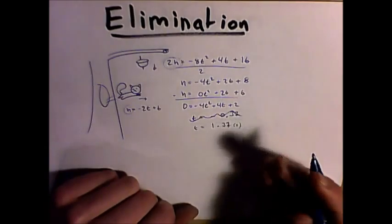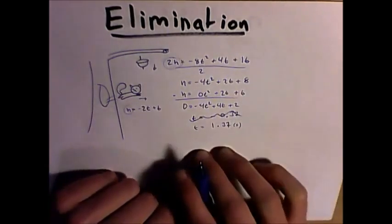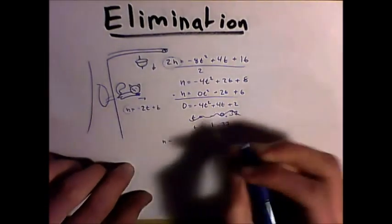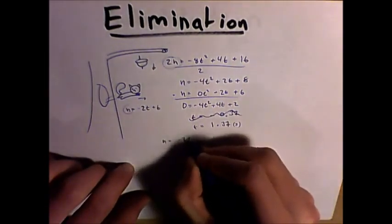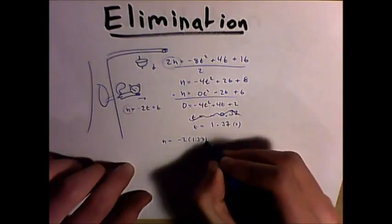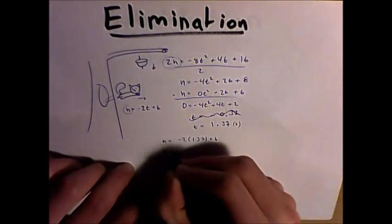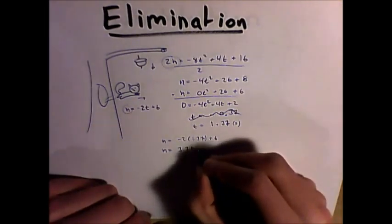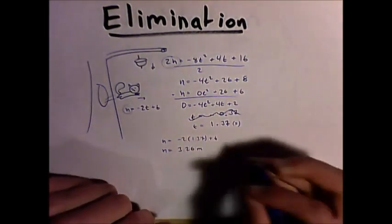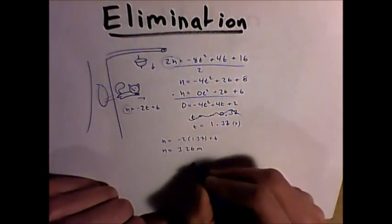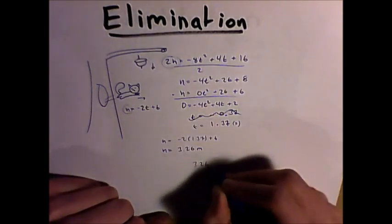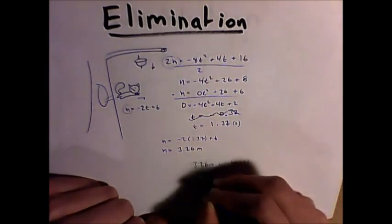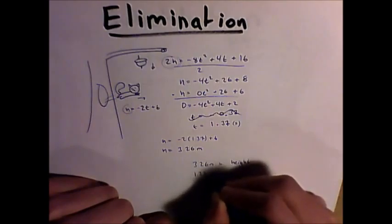so we'll just get rid of that value and we'll say that t is only equal to 1.37 seconds. But now we want to find the height. Well, to find that is simple enough, we can simply sub in t here and solve for h. So we have h equals negative 2 times 1.37 plus 6, and we find that our height is equal to 3.26 meters.